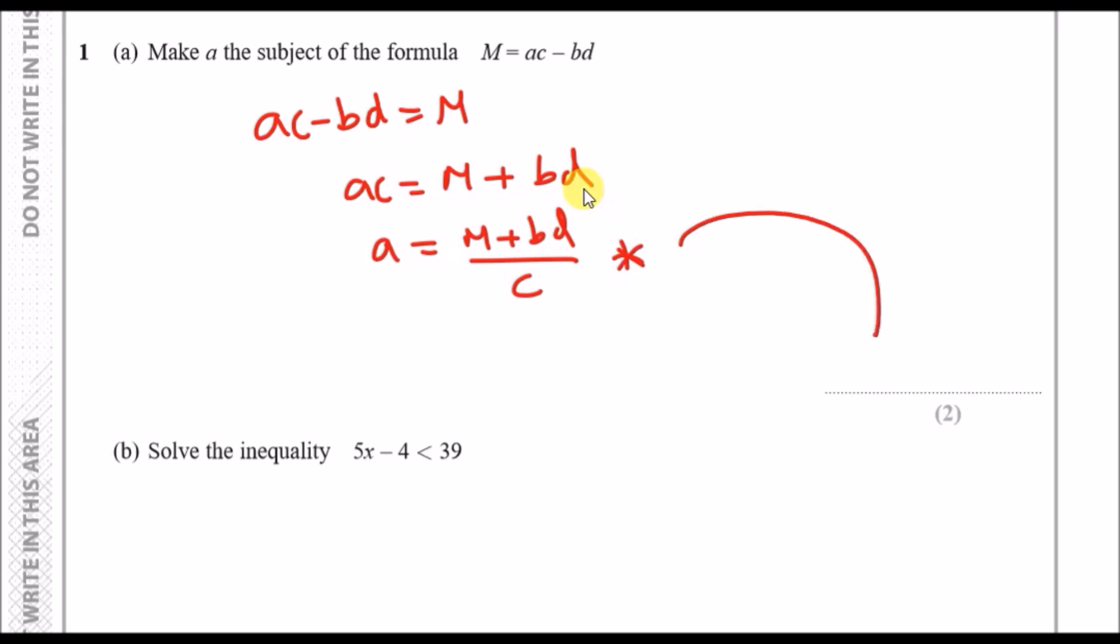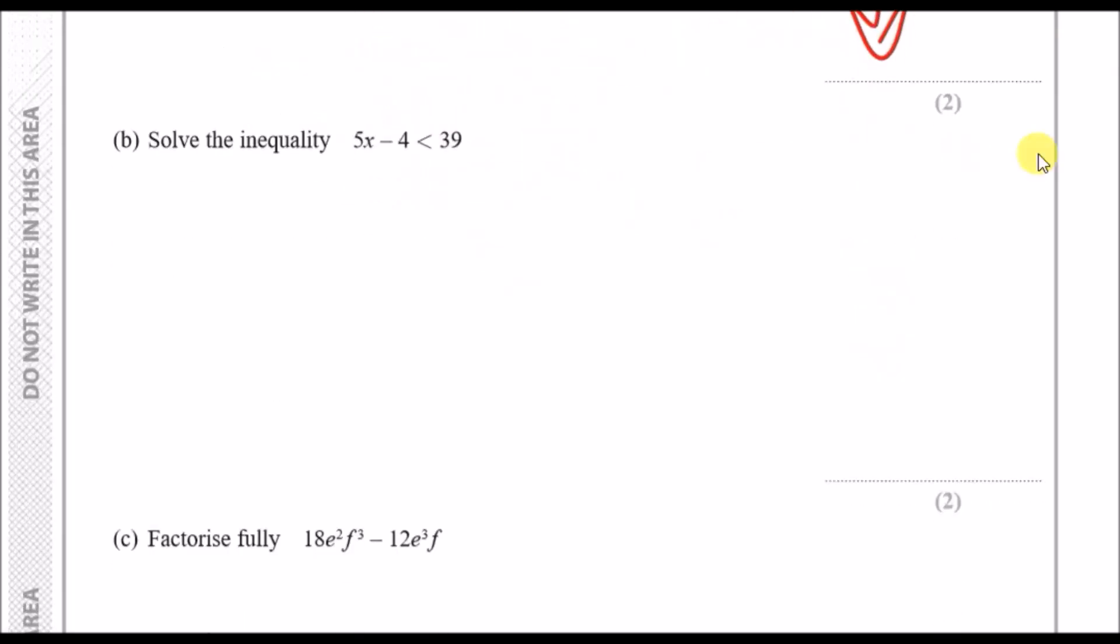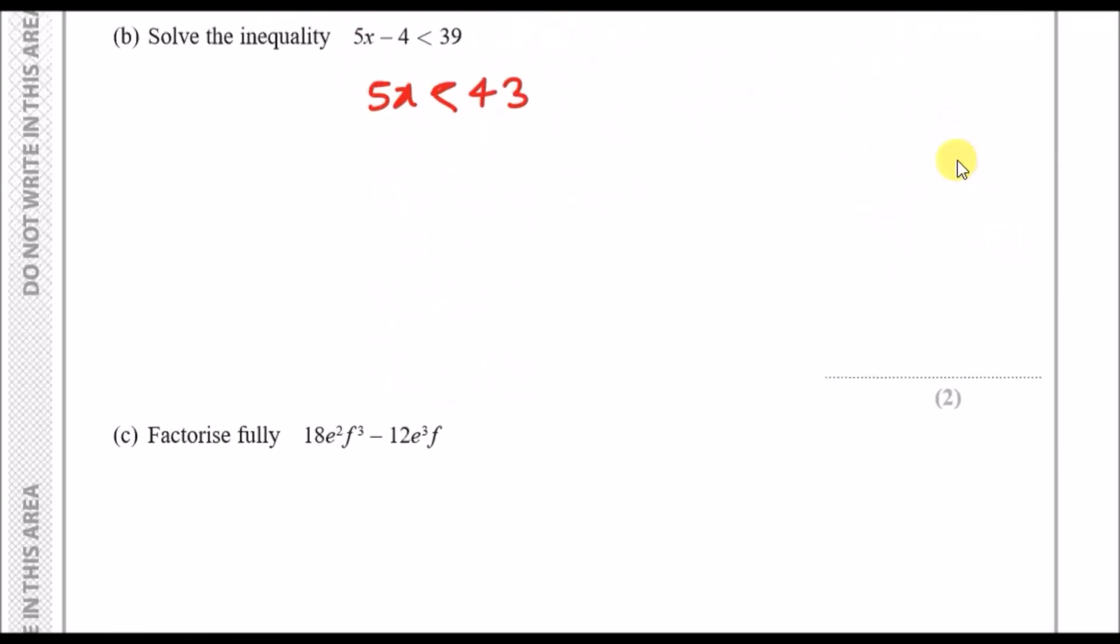Next bit, solve the inequality. Always imagine these inequalities as equal signs and then just solve as always. First, let's get rid of the numbers away from x. Instead of minus 4, we need to plus 4 across, so we have 5x less than 43. Then divide by 5 to isolate x, so we're going to have x less than 43 over 5. You can leave it here, you don't have to go deeper than this.